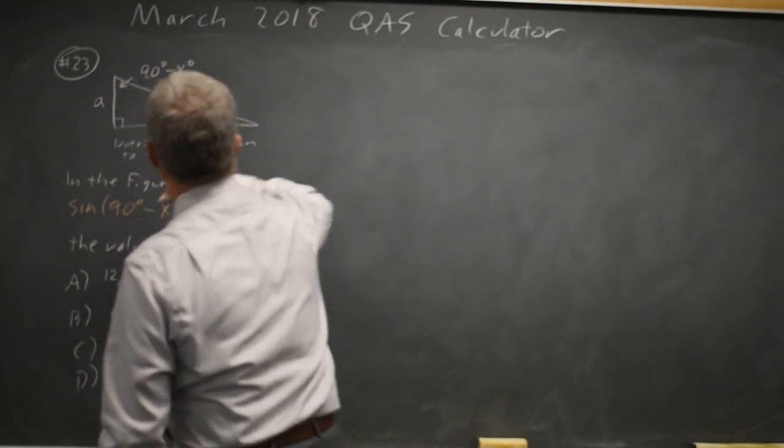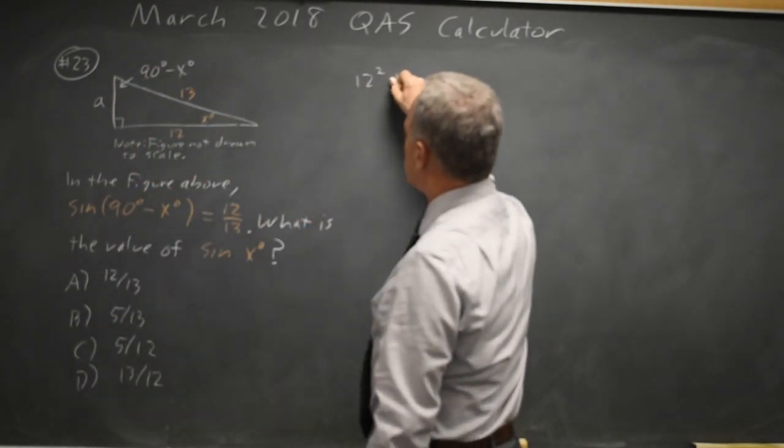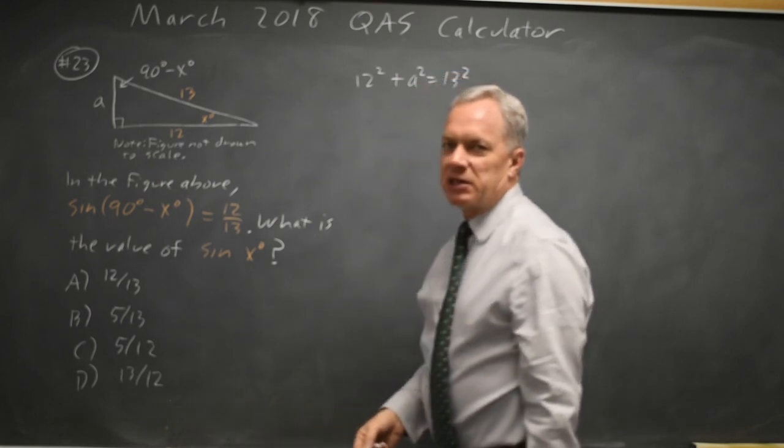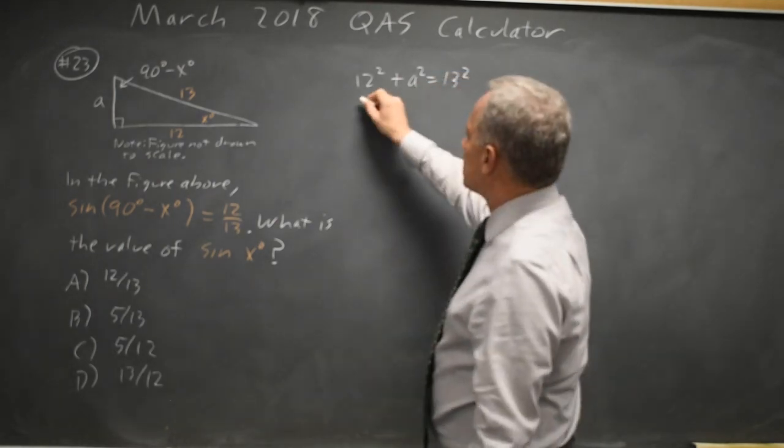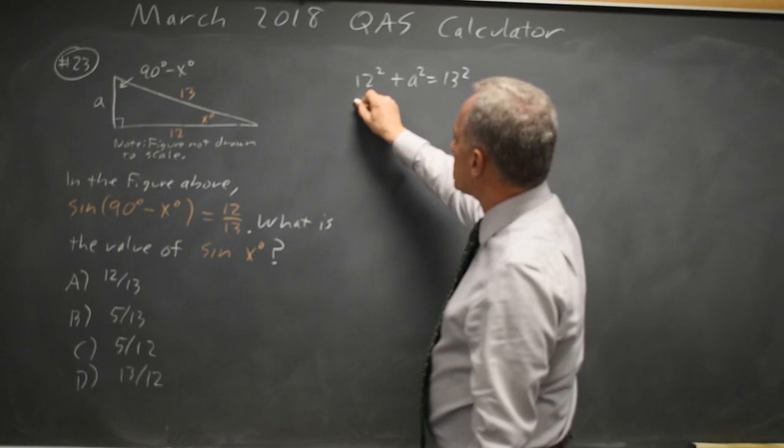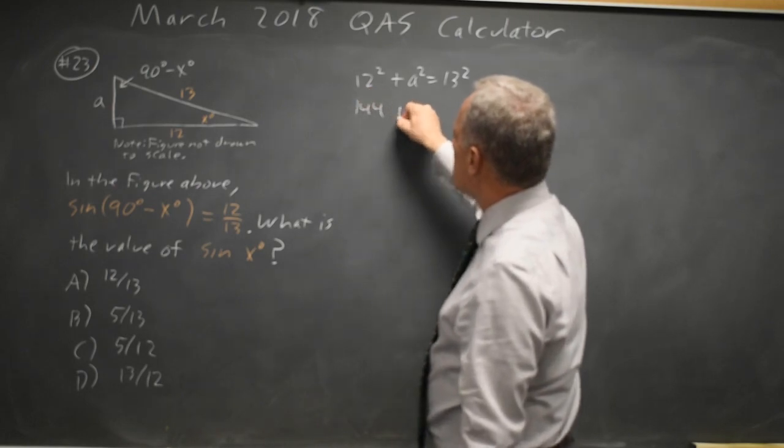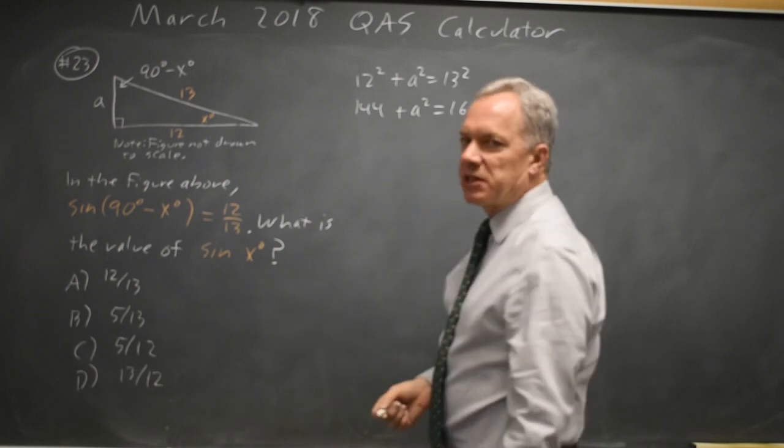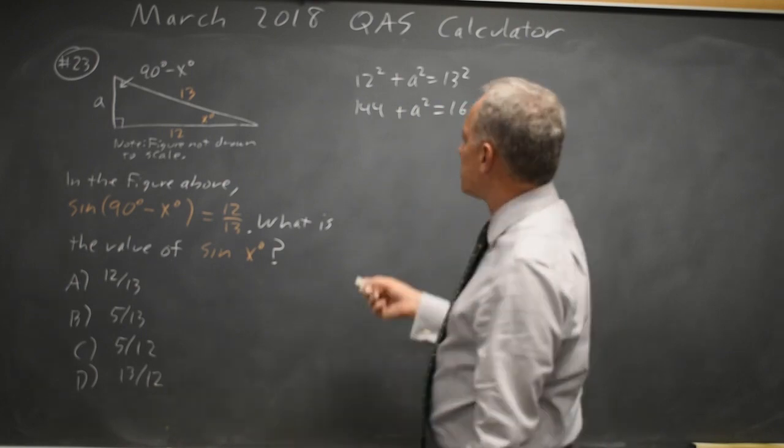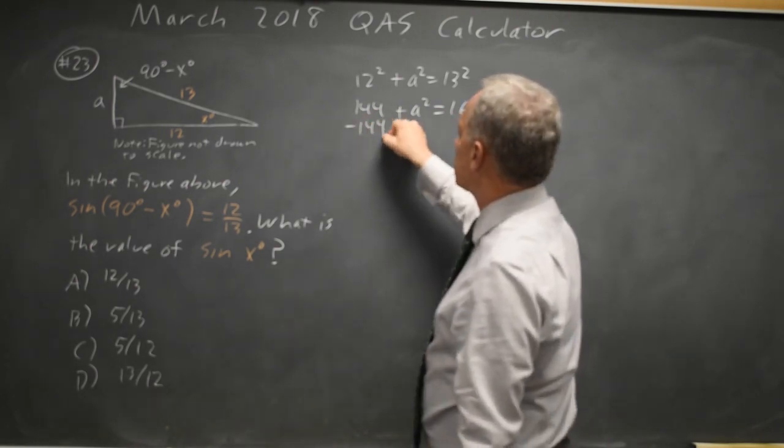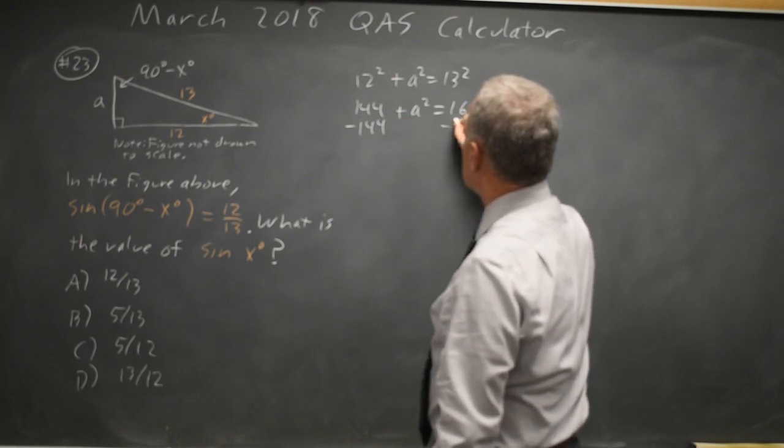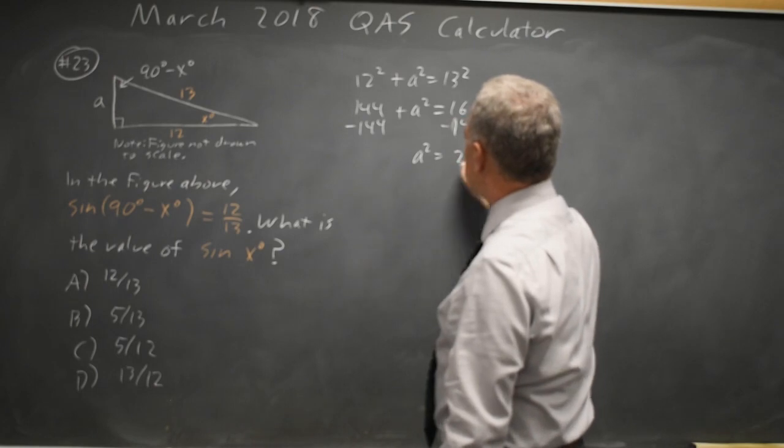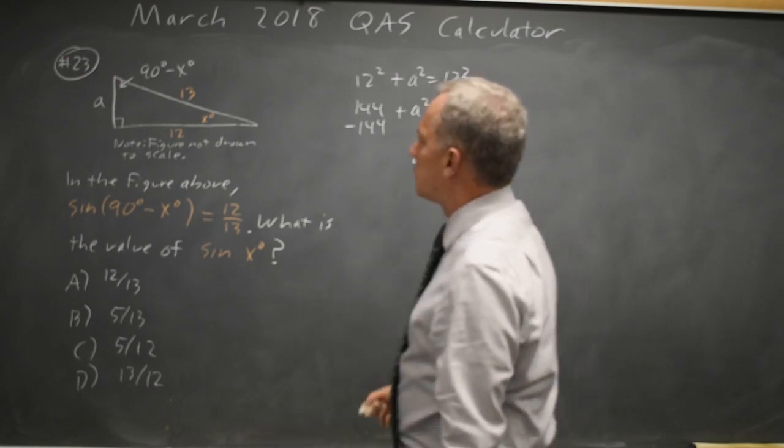If I call this side A, 12 squared plus A squared equals 13 squared, and we may recognize this as a common right triangle, or we can square it: 144 plus A squared equals 169, and this is a calculator question. You can reach for the calculator if that makes it easier. A squared equals 25, so A equals 5.